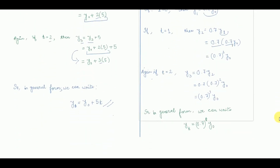Again, if we put t equal to 2, equation number 2 becomes y3 equals 0.7y2. Since y2 is already obtained as 0.7²y0, substituting gives y3 equals 0.7³y0. This process continues as we increase time. So in general form, yt equals 0.7^t. Whatever the value of t, it appears as the power or exponent. So the solution is yt equals 0.7^t × y0.